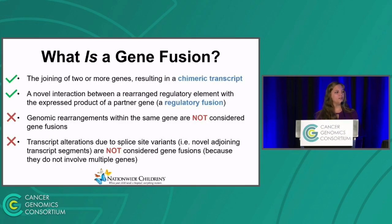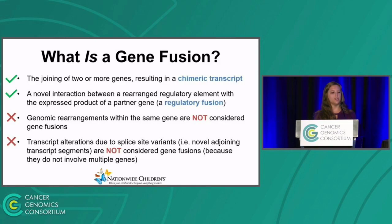Before we proceed, we need to define exactly what a gene fusion is, because apparently there can be some discrepancies with this definition. To be ultimately clear, according to this specification, a gene fusion is the joining of two or more genes resulting in a chimeric transcript or a novel interaction between a rearranged regulatory element with the expressed product of a partner gene — this is referred to as a regulatory fusion. A gene fusion is not genomic rearrangements within the same gene, and additionally, transcript alterations due to splice-site variants — for example, novel adjoining transcript segments — are not considered gene fusions because they do not involve multiple genes.